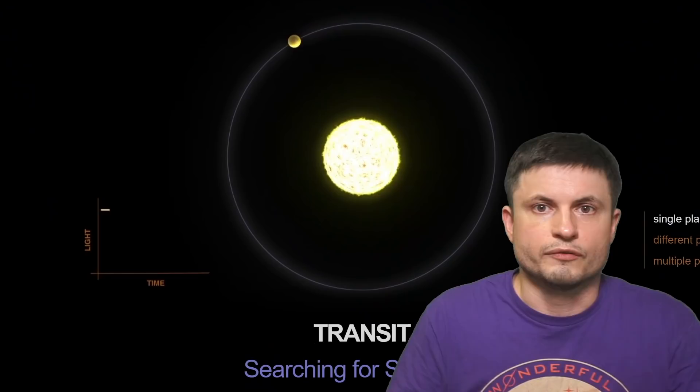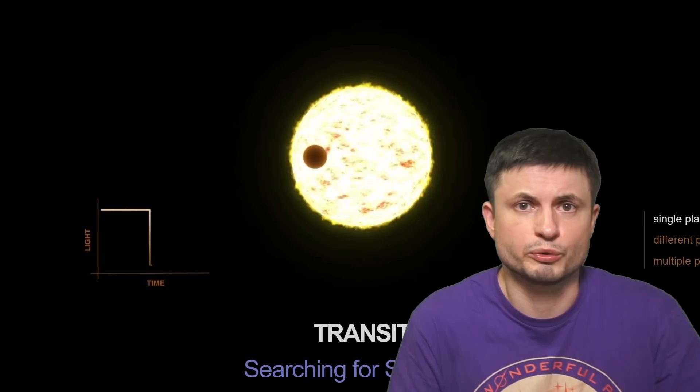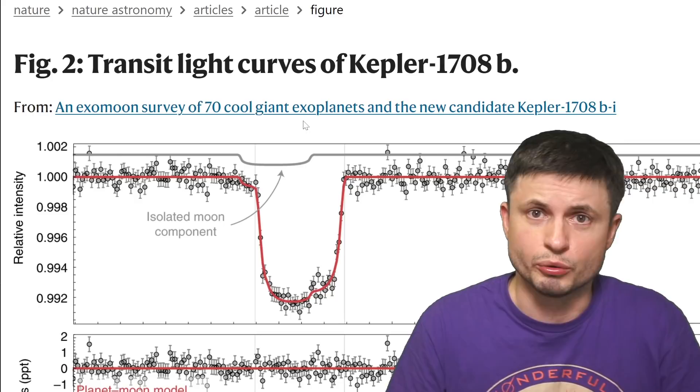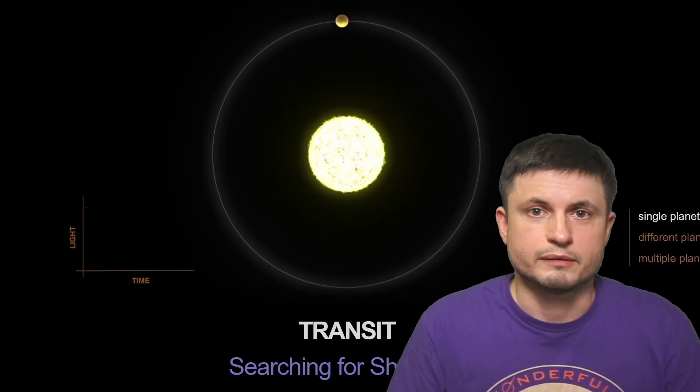For example, the most common method of finding exoplanets, the transit method, that's essentially represented right here, that's when you look at the shadow of the planet passing in front of the star, would generally produce such a minuscule observation that it would be quite difficult to determine if it's just noise or an actual object passing in front of the star.